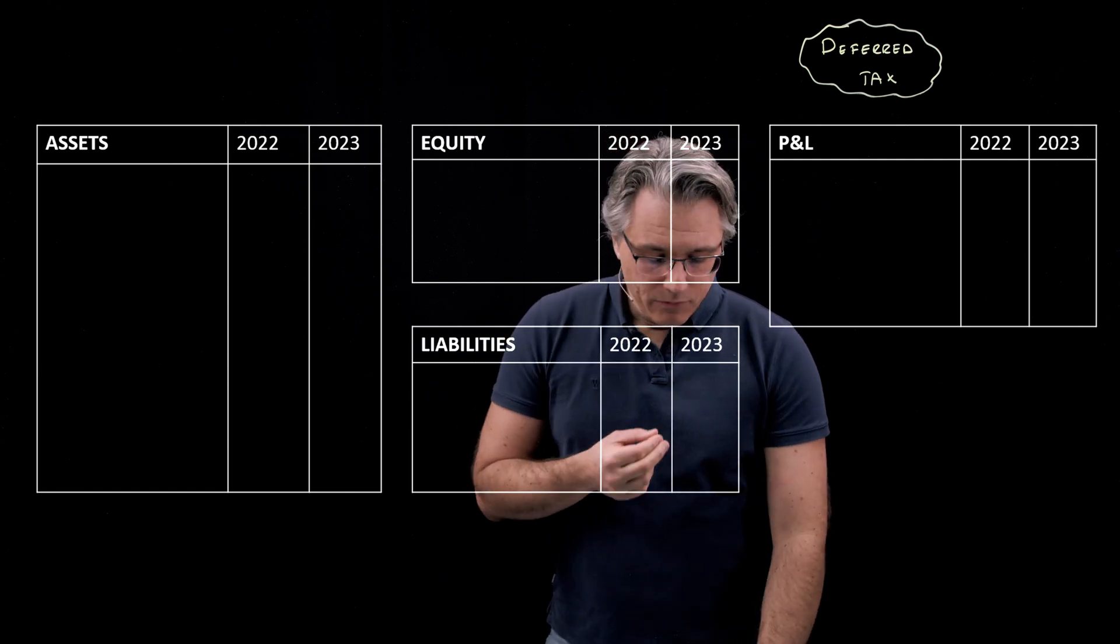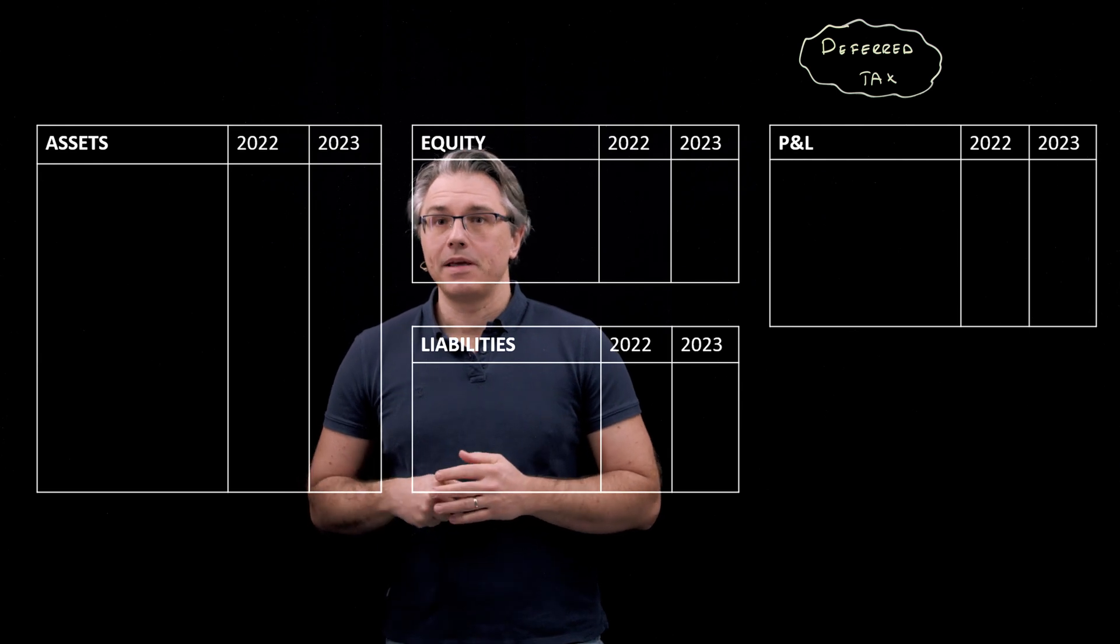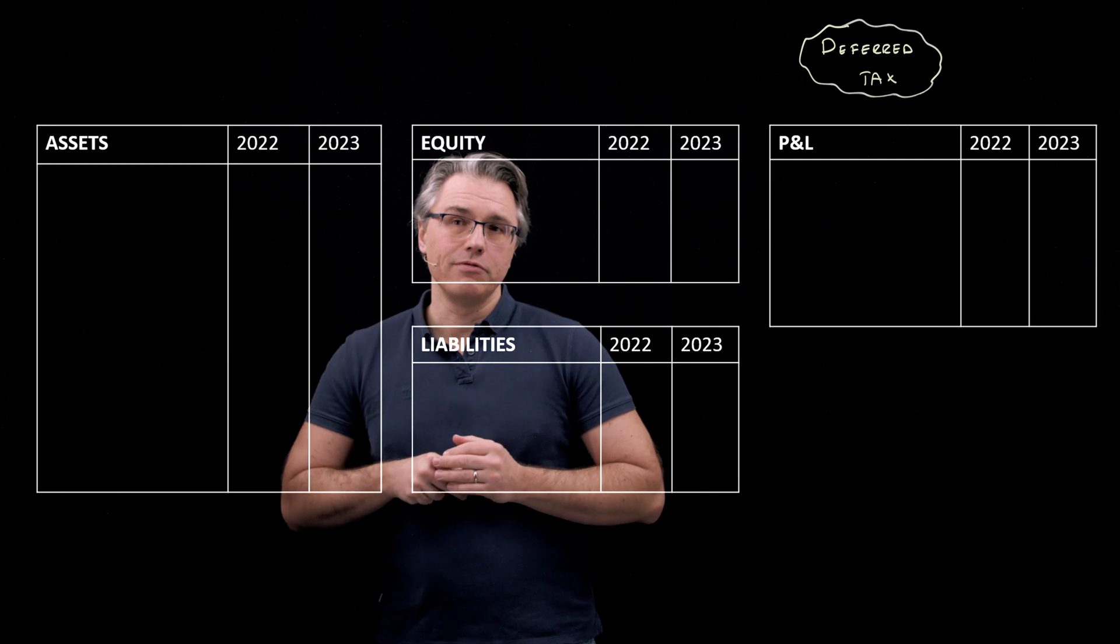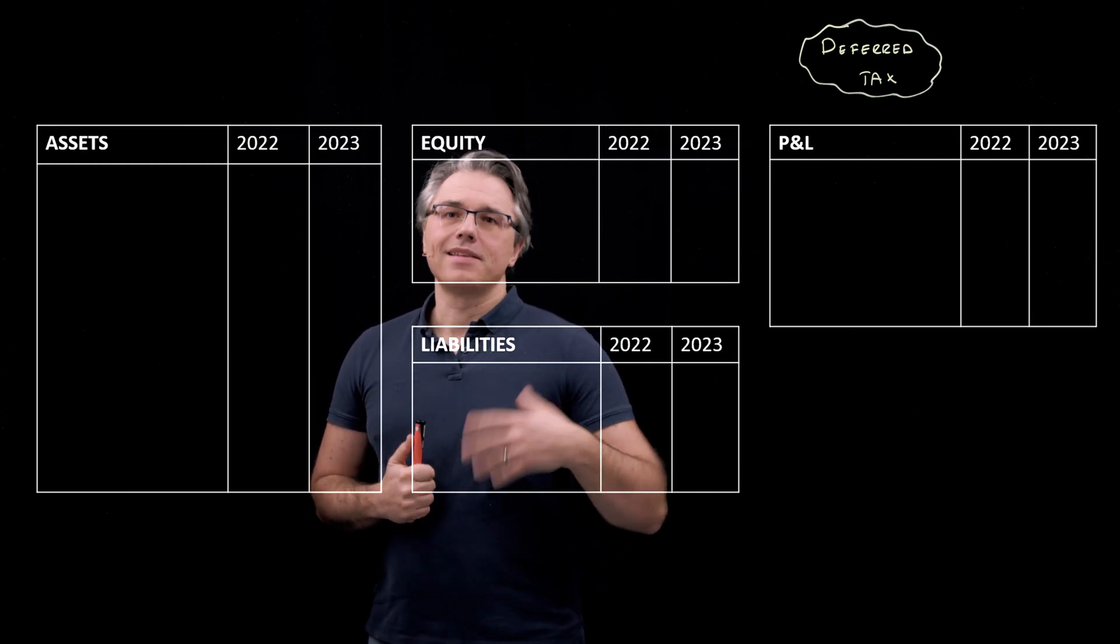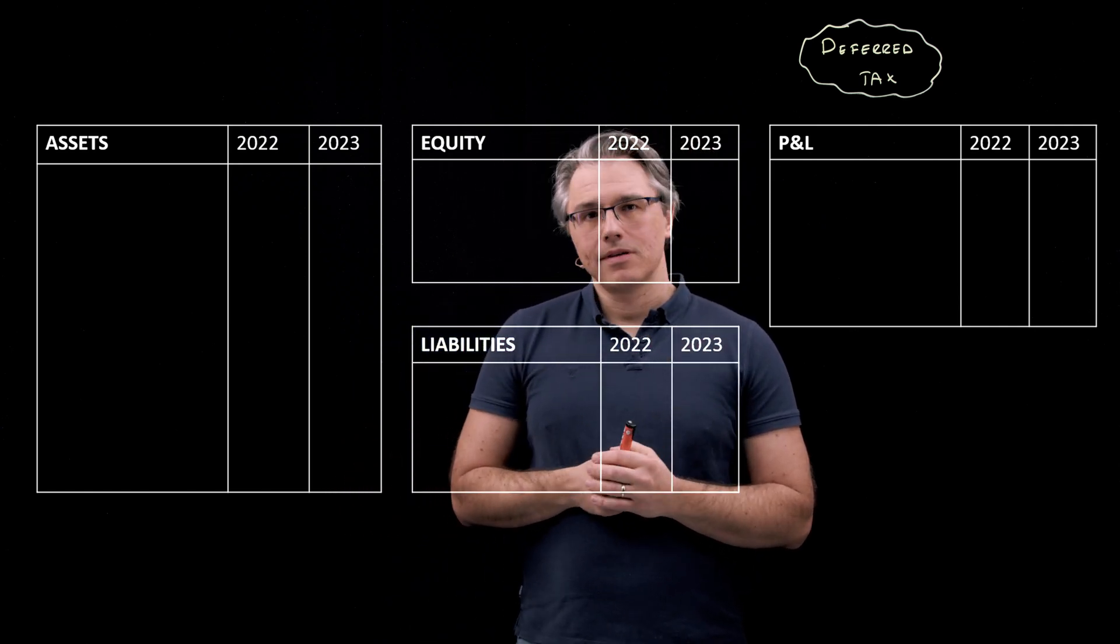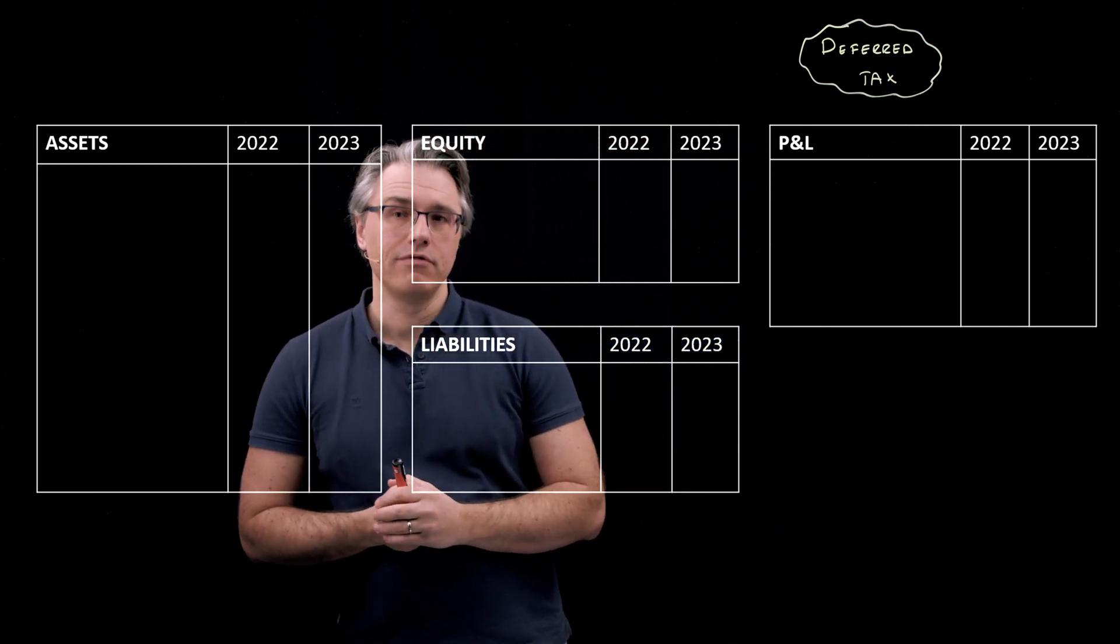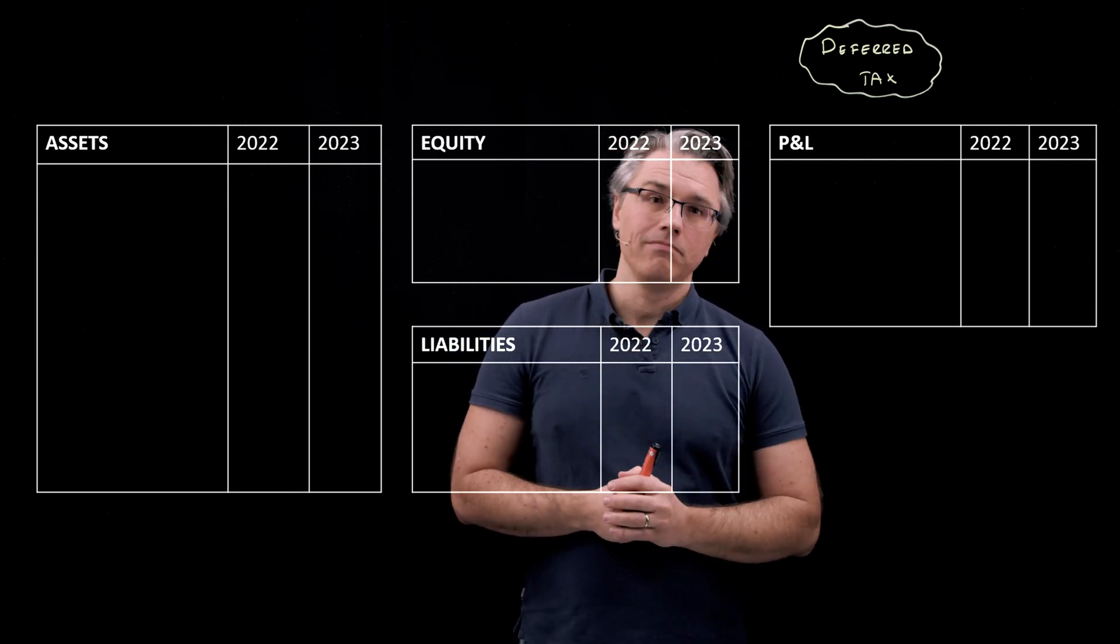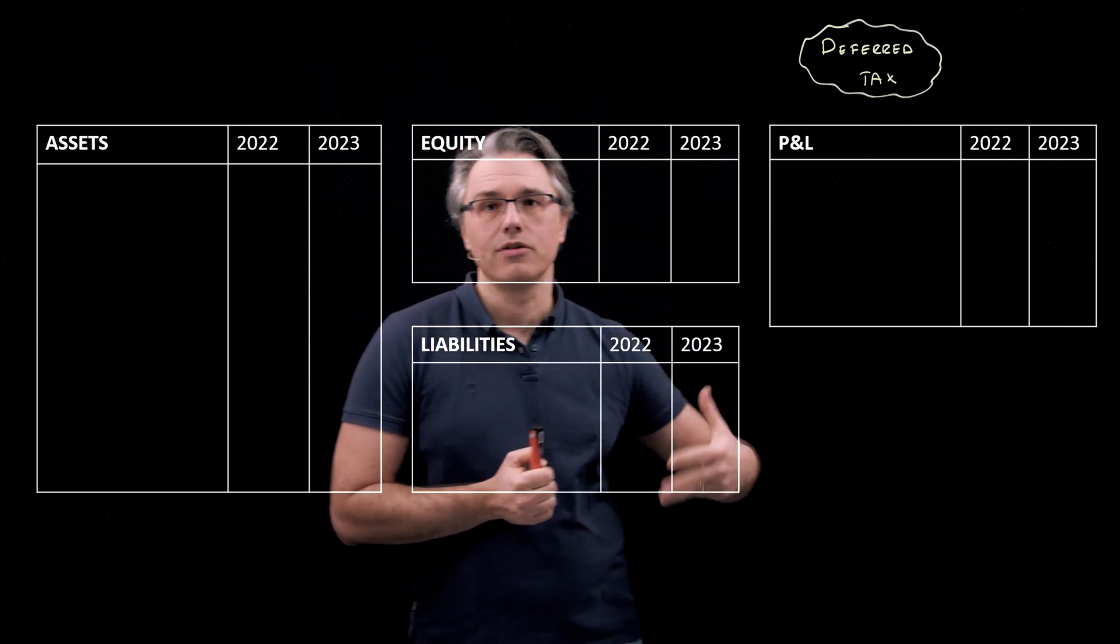What does it mean when we say that a company recognizes a provision for warranty expenses or warranty related work expenses? Very often when a company sells a product and receives revenue from a client, it will also under IFRS or US GAAP rules have to recognize a provision for the fact that over the coming one, two years, it will statistically speaking have to perform some warranty work, which will cost it some money.